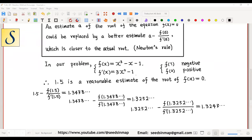And again, this new estimate could be replaced by a better estimate, this one, which equals 1.3247 and so on. Here, it could be expected that the leading digits 1.32 will never change in the future steps.